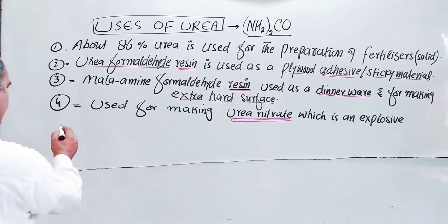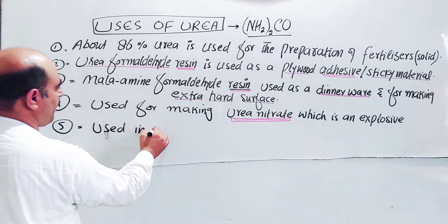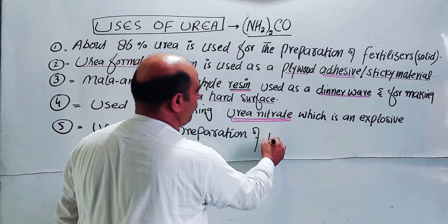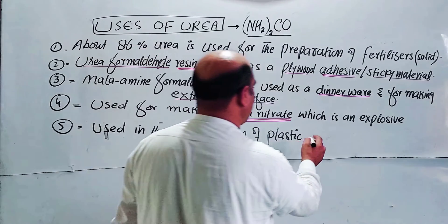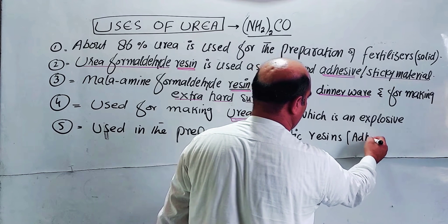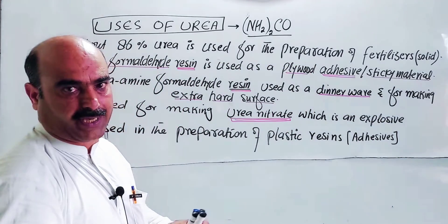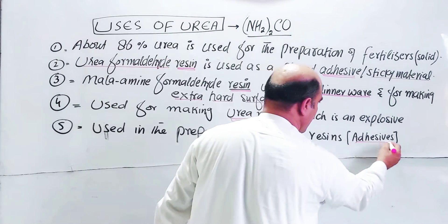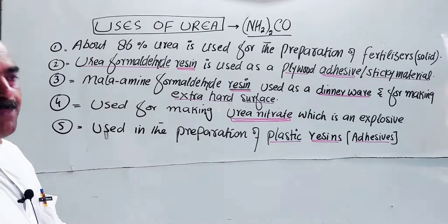Use number 5: urea is used as a raw material in the preparation of plastic. Urea is an important raw material and basic material for plastic production. Additionally, the urea-formaldehyde resin already discussed is used as an adhesive — a sticking material that bonds surfaces together.